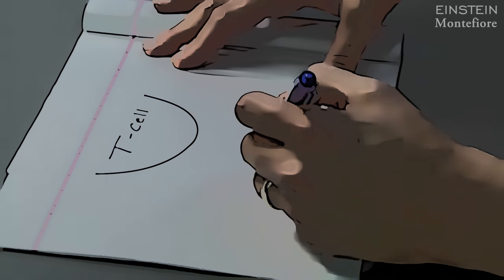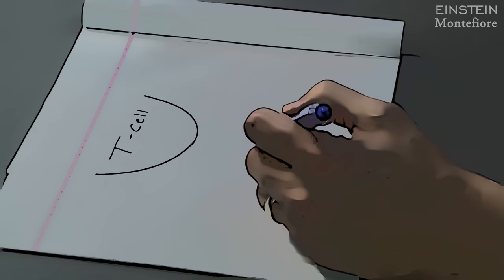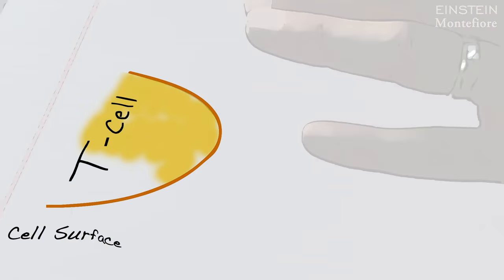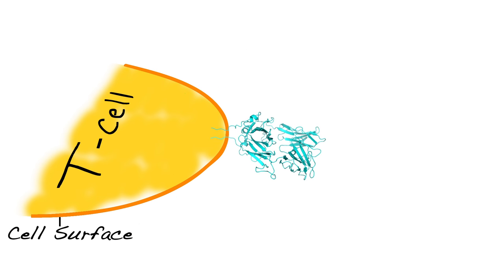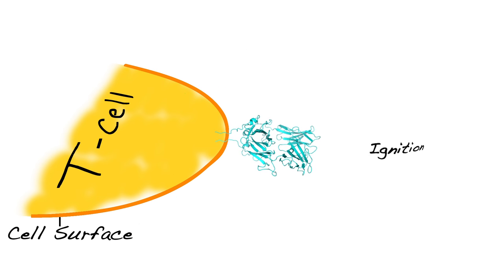And the T cell has a large number of proteins that are on the cell surface, and these are really the sensors or gatekeepers of function. There's one particular protein on the cell surface that is actually the ignition. That protein recognizes infected and malignant cells and turns on the T cell.